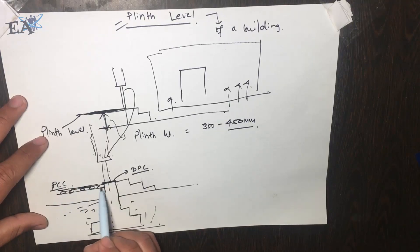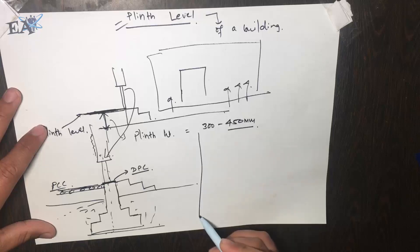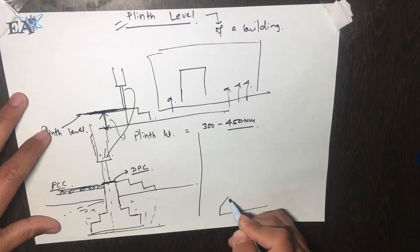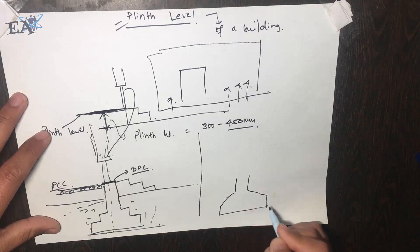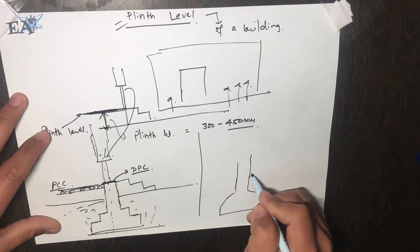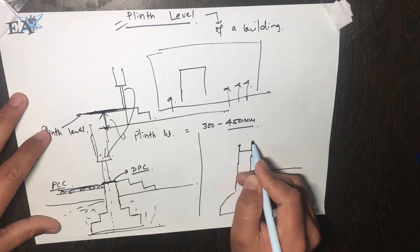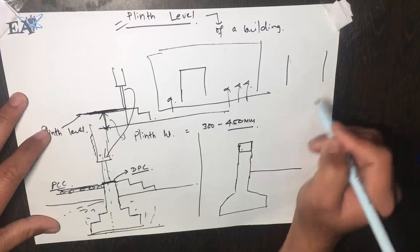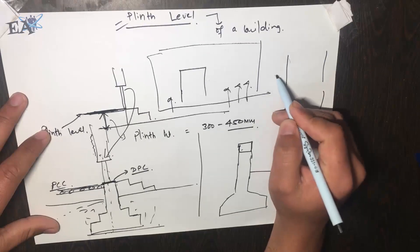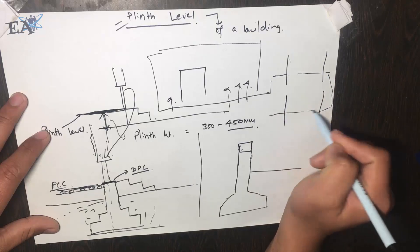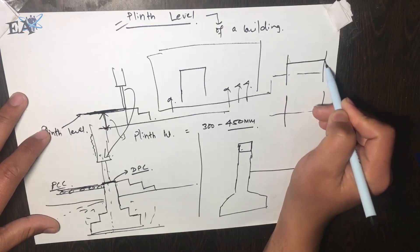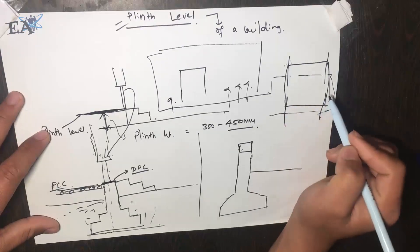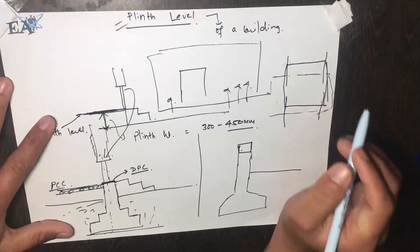The ground floor has a floor finish and below that is PCC — Plain Cement Concrete — and below that is a stone soling. Now, if your structure is a frame structure, you have a footing, which might be a raft foundation or isolated footing. Suppose you have four footings at the ground level, and these four columns or footings are connected with tie beams.